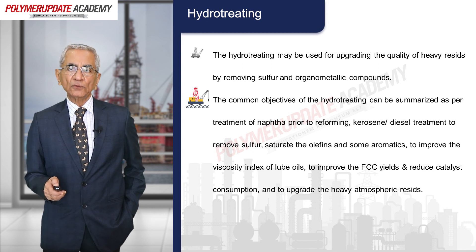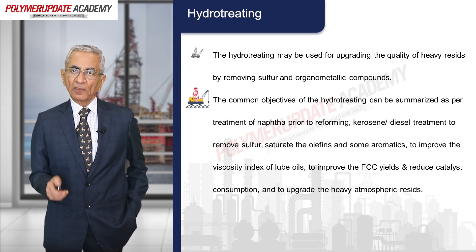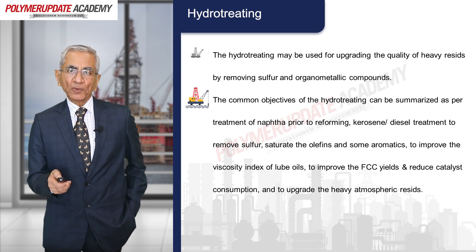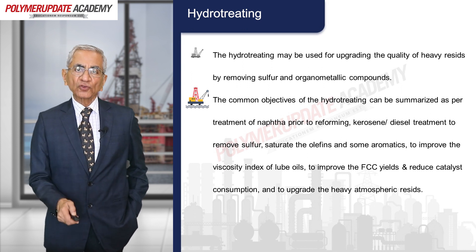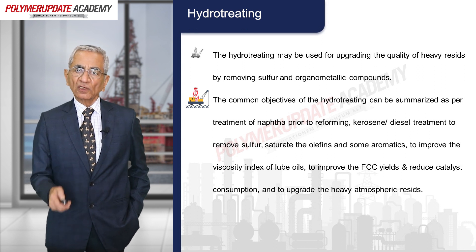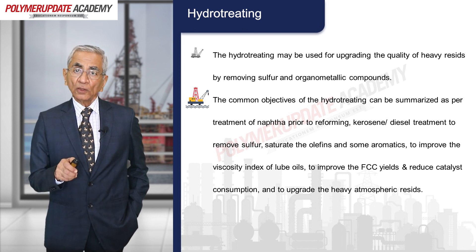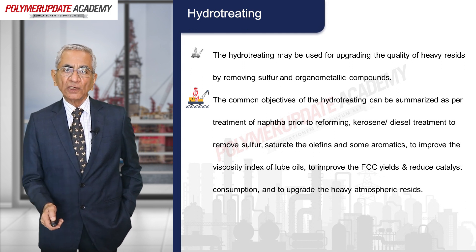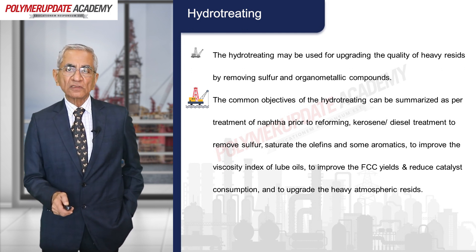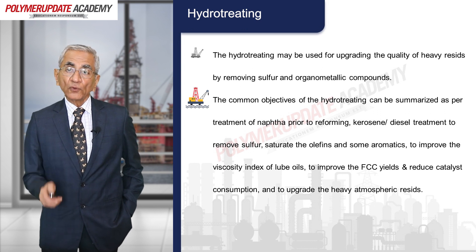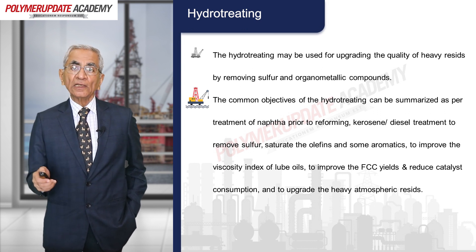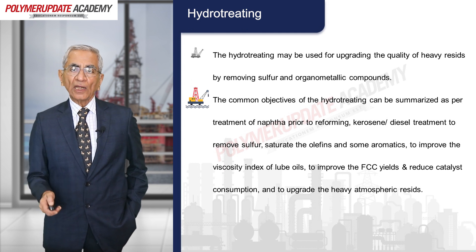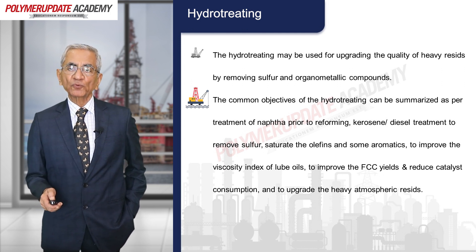Hydrotreating may also be used for upgrading the quality of heavy feedstocks by removing sulfur and organometallic compounds. The common objectives of hydrotreating can be summarized as: pretreatment of naphtha prior to reforming; kerosene and diesel treatment to remove sulfur; saturation of olefins and some aromatics; improving the viscosity index of lube oils; improving fluid catalytic cracking feeds; reducing catalyst consumption; and upgrading heavy atmospheric residues.